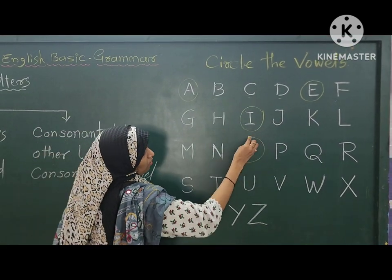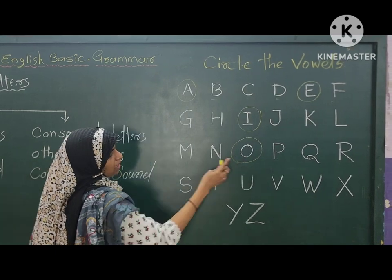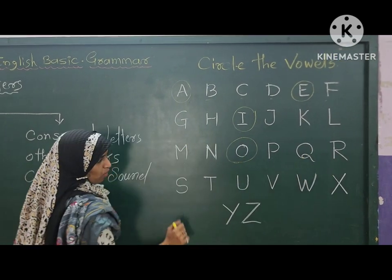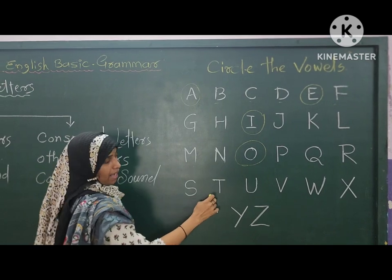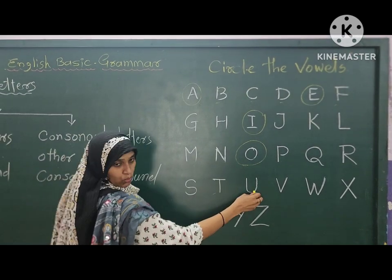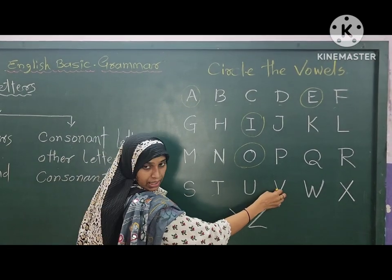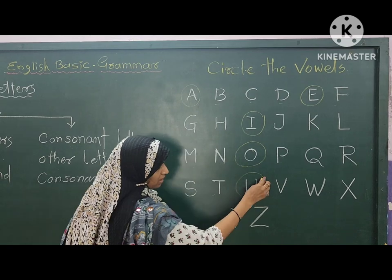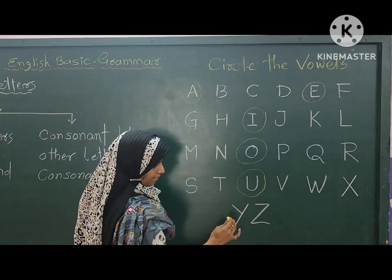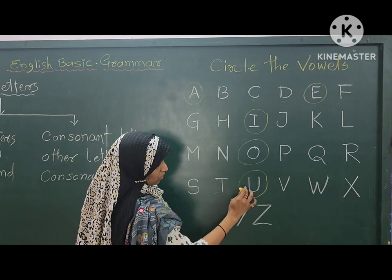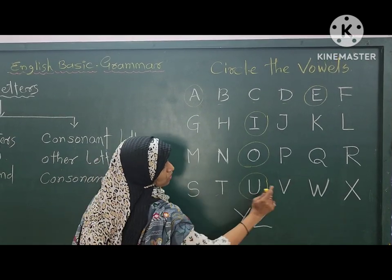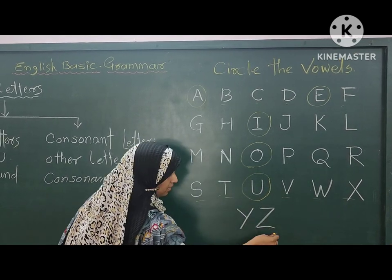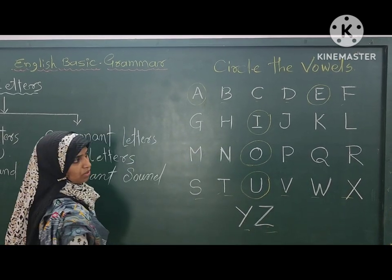Here O is the vowel, and N, T, Q, R are consonants. Now S, T, U, V, W, X — here U is the vowel and the rest are consonants. Y and Z are nothing but consonants.